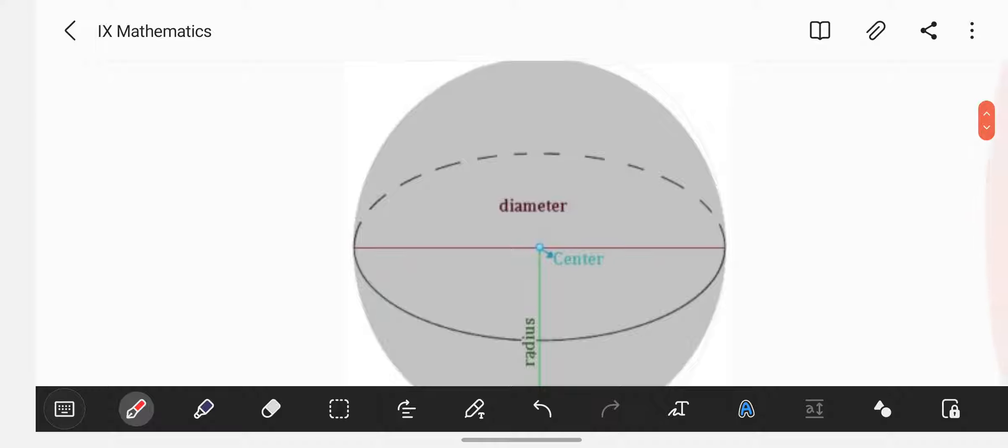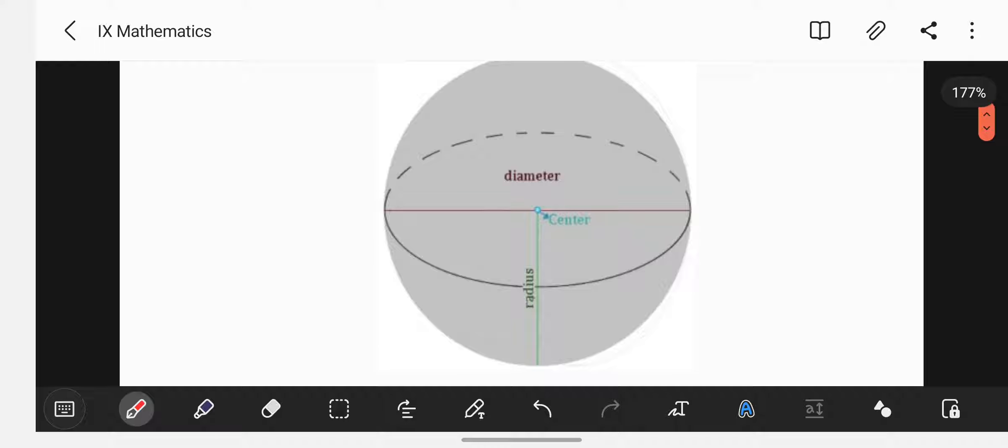So by looking at this diagram, it will clear the entire doubts here. Suppose I am taking this imaginary as a center. So the point, a line segment from the center to the surface of the sphere is the radius and one which is passing through the center will become the diameter.